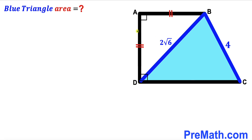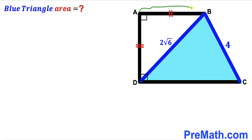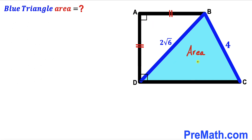Welcome to Premath. In this video we have got trapezoid ABCD as shown in the diagram, along with segment BD, which gives us the blue shaded triangle BCD. The side length BC of this blue shaded triangle is 4 units, whereas side length BD is 2 times the square root of 6 units. Furthermore, segment AB equals segment AD, the angle between them is 90 degrees, and our task is to calculate the area of the blue shaded triangle BCD.